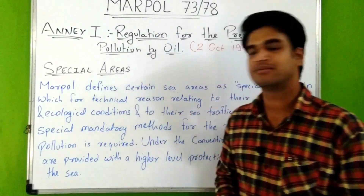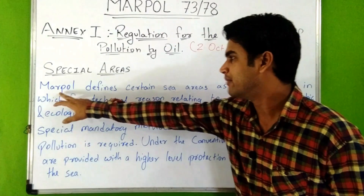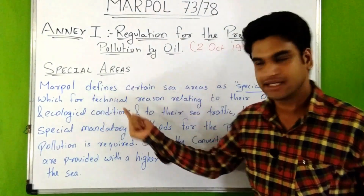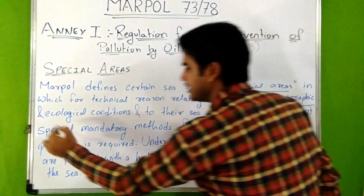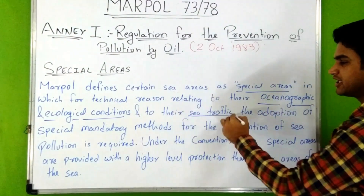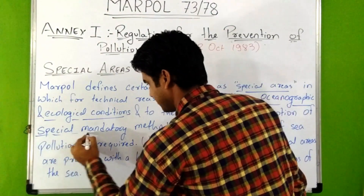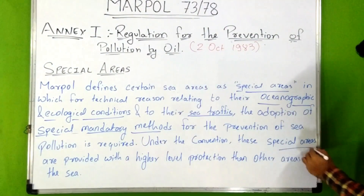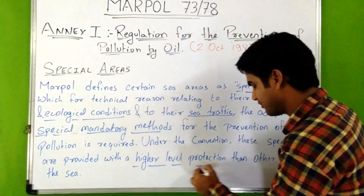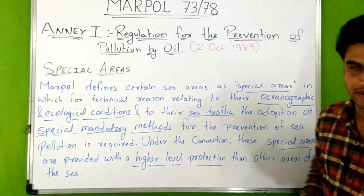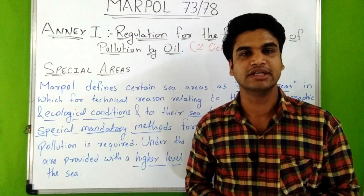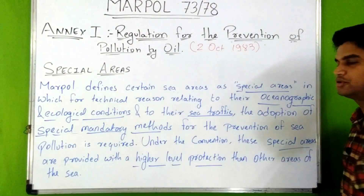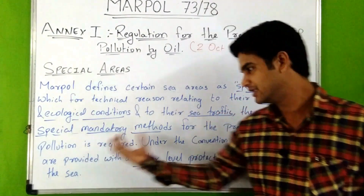Now let's look at the steps adopted by IMO under Annex 1 for prevention of pollution by oil. First is special areas. MARPOL defines certain sea areas as special areas, in which, for technical reasons relating to their oceanographic and ecological conditions and sea traffic, adoption of special mandatory methods for prevention of pollution is required. These areas are provided with a higher level of protection.